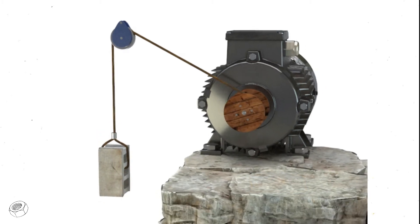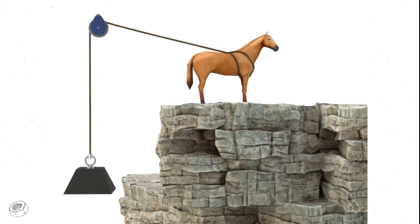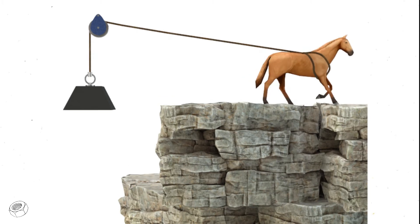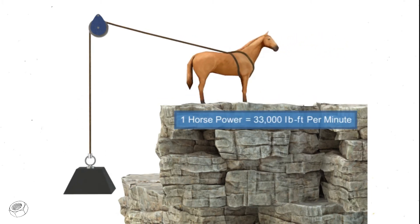Horsepower is defined as the rate at which work is accomplished. Years ago, before motors were invented, most work was accomplished manually. It was estimated that one horse could accomplish approximately 33,000 pound-foot of work per minute, and thus the term horsepower was born.